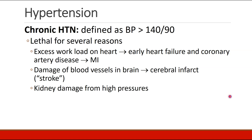Chronic hypertension is defined as a blood pressure greater than 140 over 90, and chronic hypertension is lethal for several reasons. It increases the workload on the heart, leading to early heart failure and coronary artery disease. It leads to damage of blood vessels in the brain, which can cause a cerebral infarct or stroke, and it leads to kidney damage from high pressures in the capillaries.